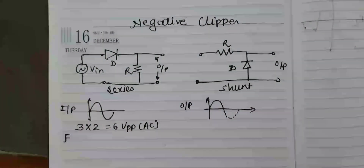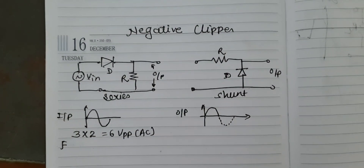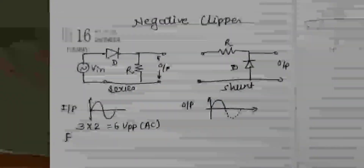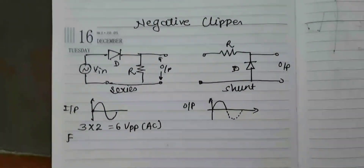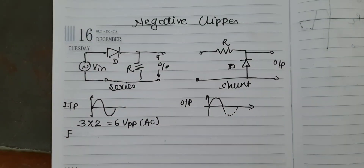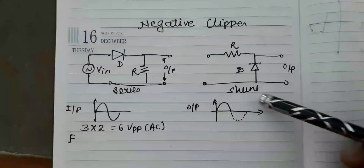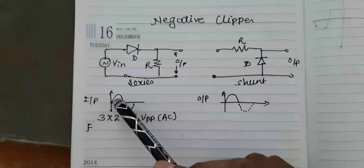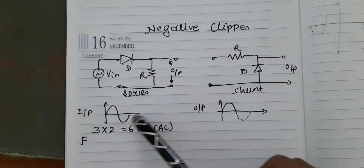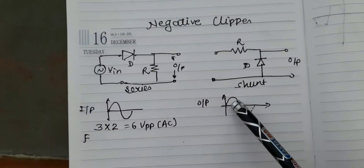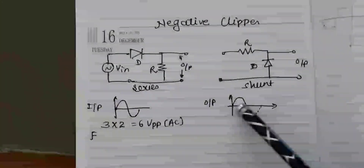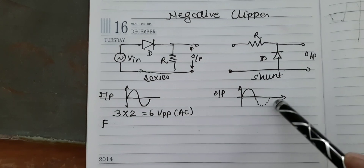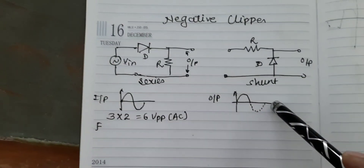The aim of this practical is to assemble the negative clipper circuit and test its performance. A negative clipper is a circuit which clips the negative half cycle of the AC input. From the AC input, only the positive cycles are obtained, as the negative half cycle is clipped or removed.